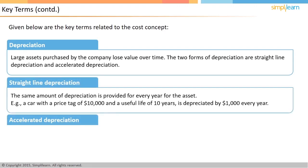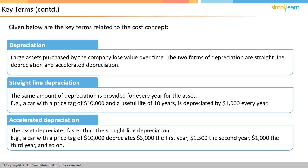Large assets purchased by a company lose value over time — this is called depreciation. Straight-line depreciation takes the same amount every year; for example, a car worth ten thousand dollars with a useful life of ten years depreciates one thousand dollars per year, reaching zero value at year ten. Accelerated depreciation depreciates faster — the same car would lose three thousand dollars the first year, fifteen hundred the next, one thousand the third year, and so on.